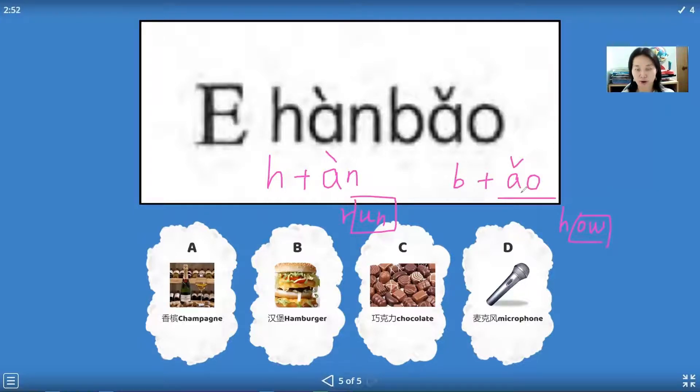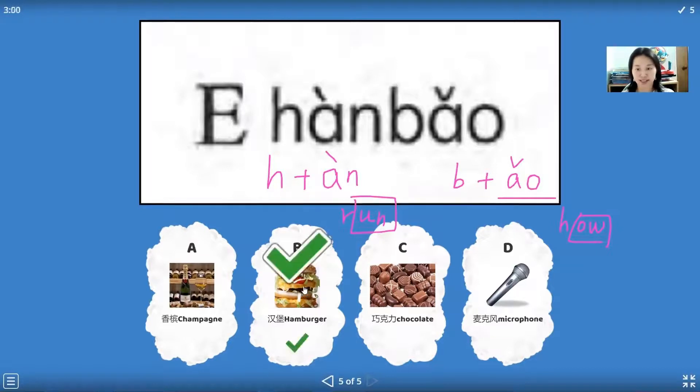And this word we say han bao. Han bao is hamburger. We just choose the B, it's the correct answer.